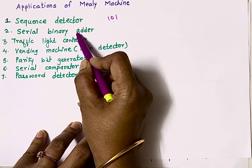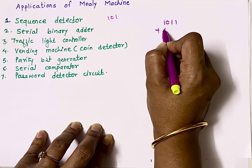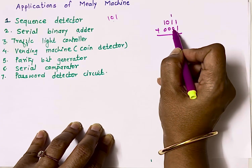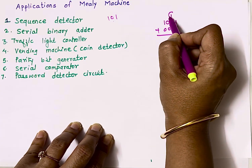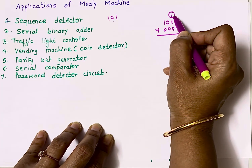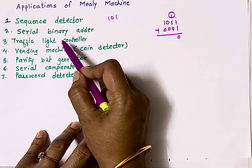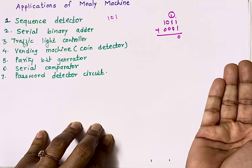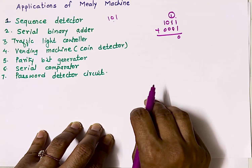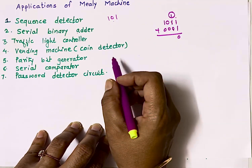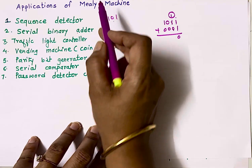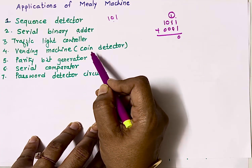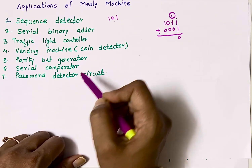Another application is the serial binary adder. For example, adding two numbers: 1,0,1,1 plus 1,0,0,0,1 — here 1 plus 1 gives sum 0 carry 1, where present inputs are the current bits and the present state holds the carry. We also use Mealy FSM for traffic light controllers — after red, green comes, and we need to remember the present state is green and when the next light turns on. Vending machines for coin detection, parity bit generators, serial comparators, and password detectors also use Mealy FSM. In a password detector, for example with password 1,2,3,4, when entering digit 4, the current input and the previously entered bits 1,2,3 stored as states are equally important.